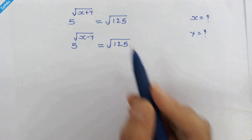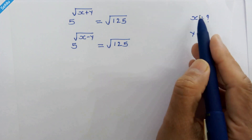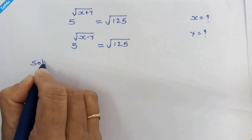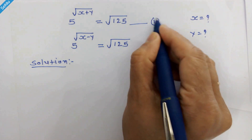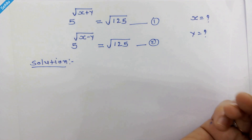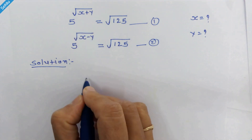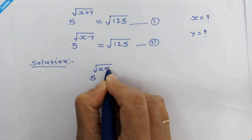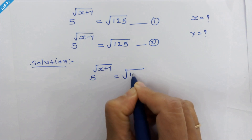Hello friends. These are our equations and we have to find the values of x and y. So let's start. We'll call this equation number 1 and this equation number 2. First we will focus on equation 1, which is 5 raised to √(x+y) is equal to square root of 125.